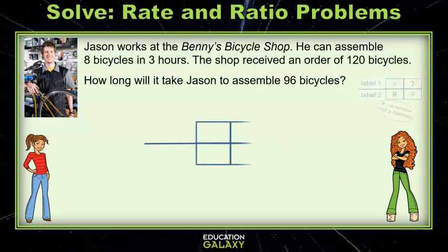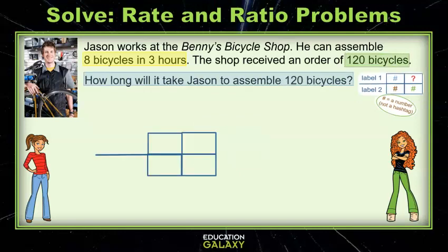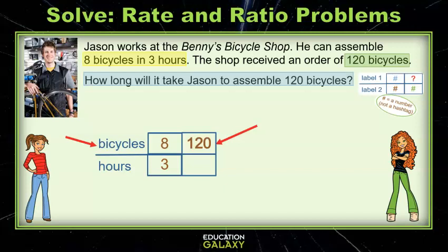Let's look at this problem with Jason. Draw your graphic organizer and highlight the important information that includes the question. We see that Jason can assemble 8 bicycles in 3 hours. The other number we know is 120, and since it's bicycles, it will go in the numerator. That's right Reba, we're looking for the number of hours which is in the denominator.